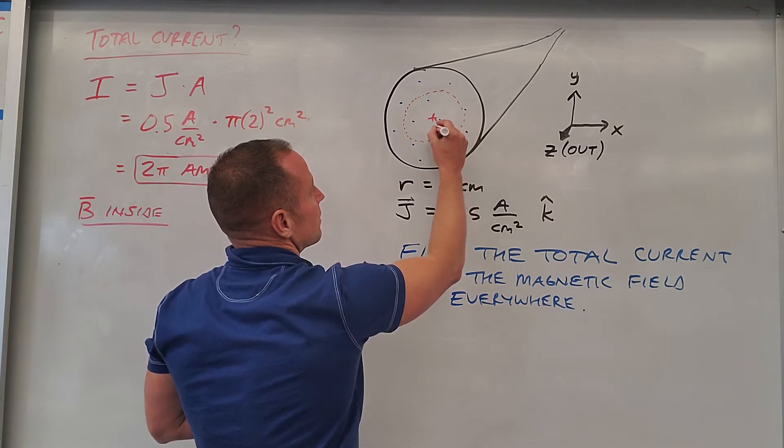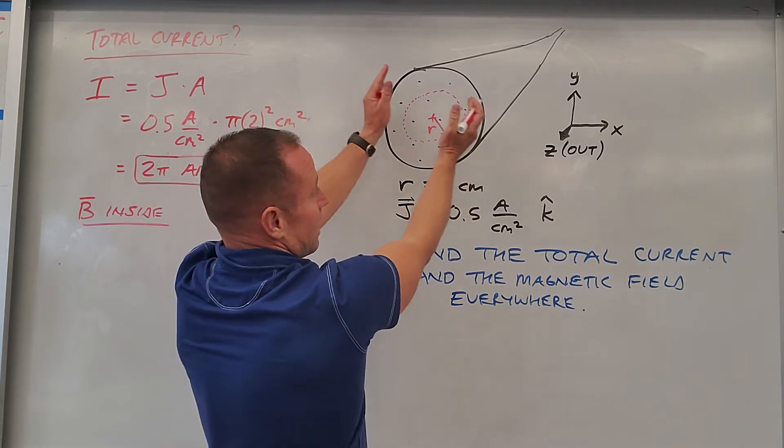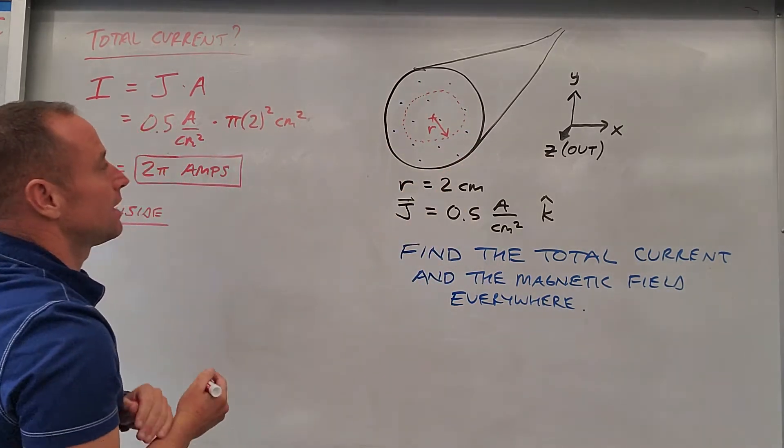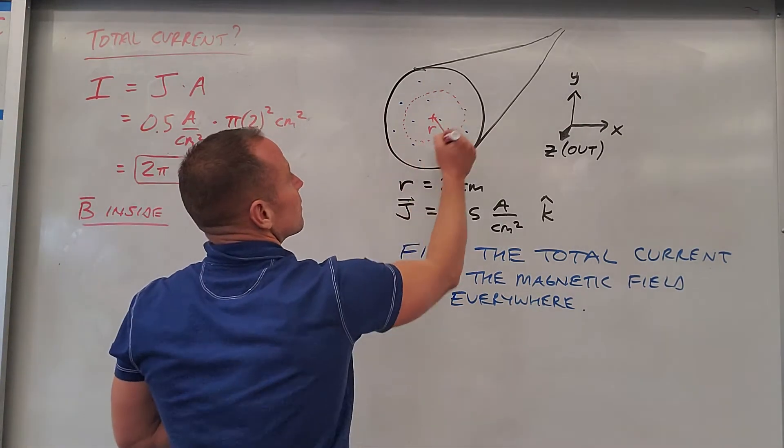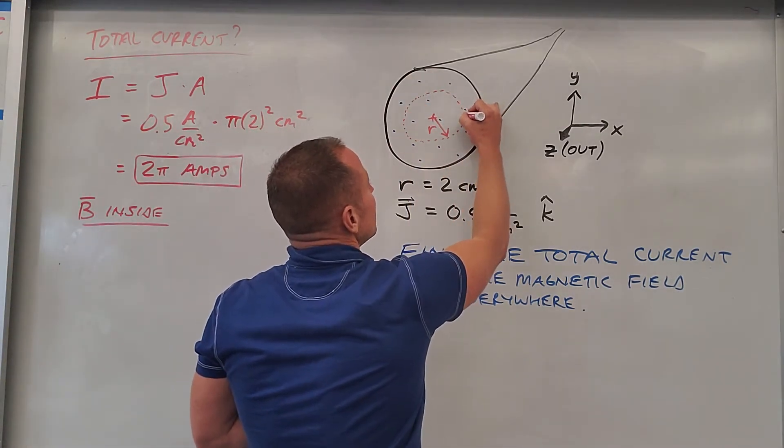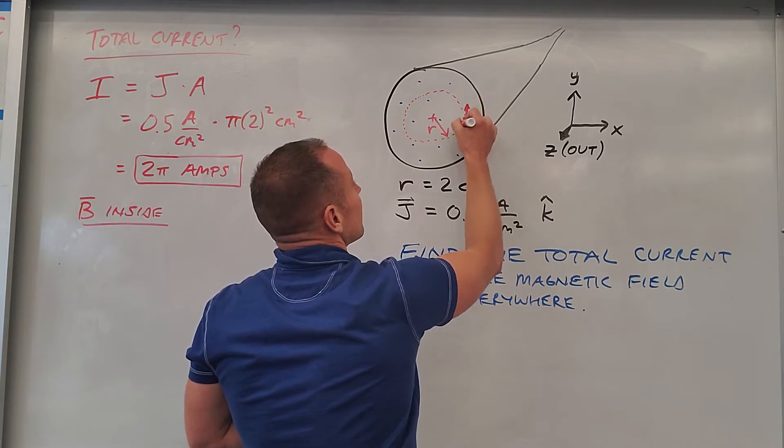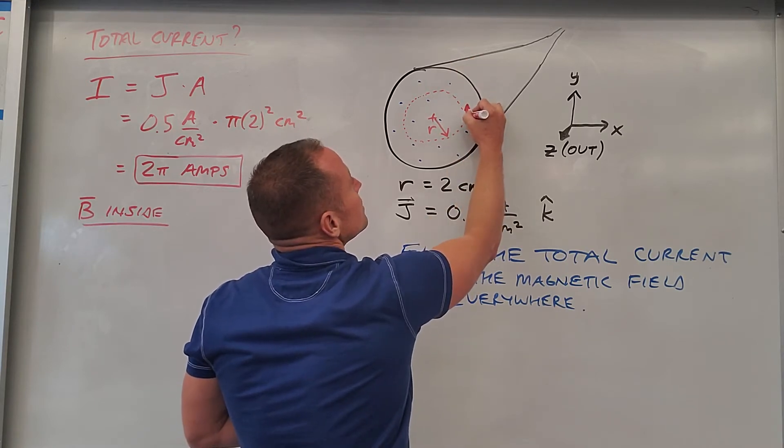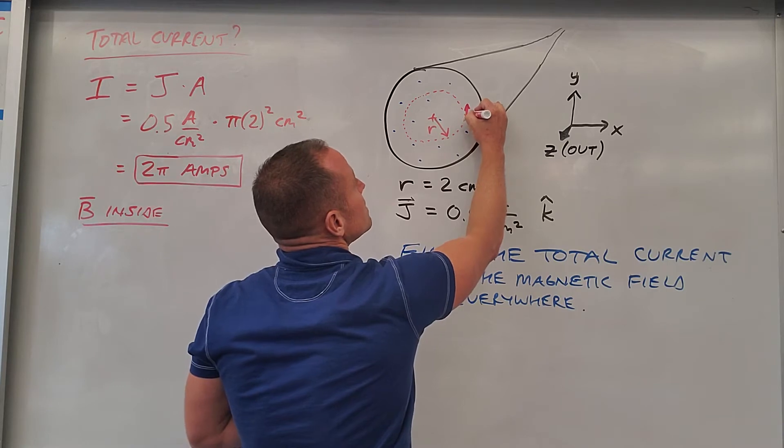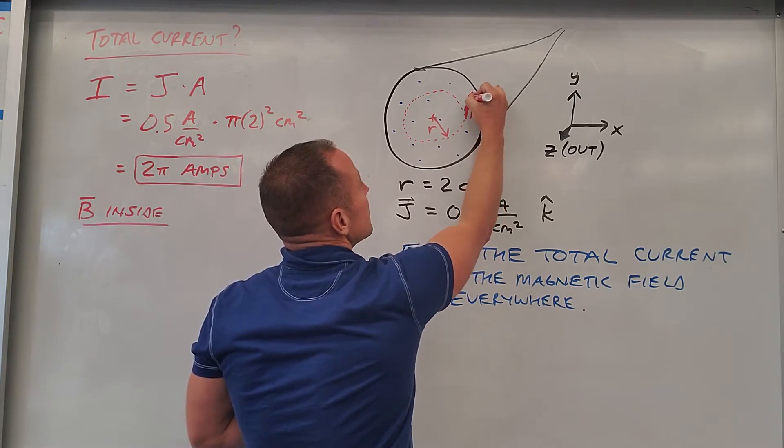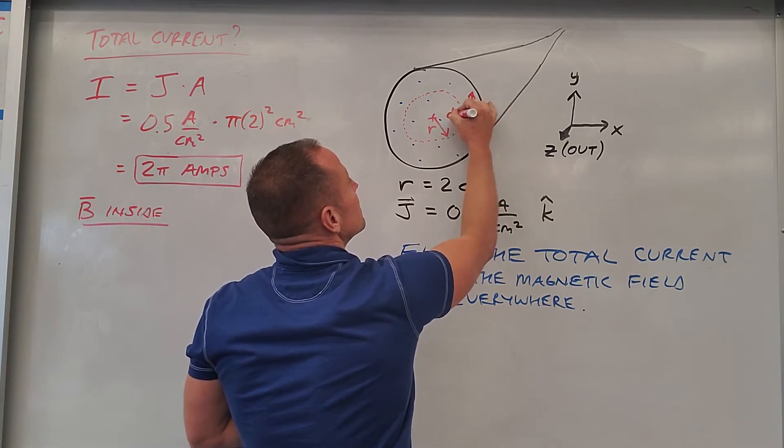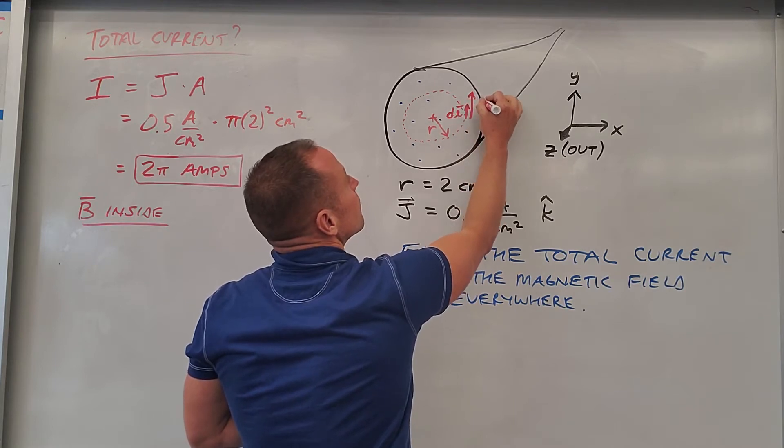inside the wire, kind of centered here at the center of the wire. We'll just give it an arbitrary radius because the idea is we want to be able to find it at all different radii. So there's our Amperian loop, a little chunk dl, a point along the loop, and it turns out